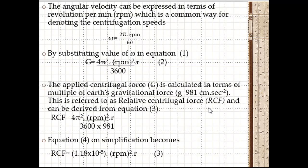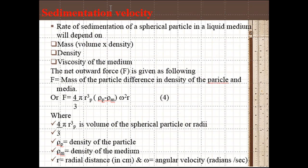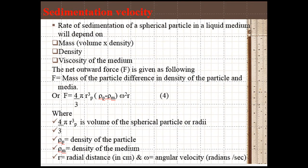Equation 4 on simplification becomes RCF = (1.18 × 10⁻⁵) × (RPM)² × r. This is a simple way to express relationship between RCF and RPM. This figure shows the nomogram for determination of field for given rotor speed and radius. Let us also discuss a few more relationships.